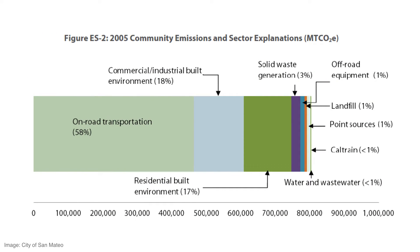Those changes to the climate, and the impacts of those, are felt most acutely at the local level. Cities and communities are suffering the impacts of these climate changes. For example, this is an emissions inventory from the city of San Mateo, California. You can see that they've accounted for the kinds of activities in their community that are resulting in emissions. In this particular community, on-road transportation is the most significant source of greenhouse gas emissions — that's from internal combustion engines. The residential and commercial built environments, primarily the use of electricity and the burning of natural gas, are also producing greenhouse gas emissions.